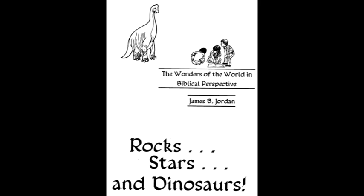Let's begin with the creation of the Sun, Moon, and Stars by looking at Genesis chapter 1, verses 14 to 19. Then God said, 'Let there be lights, or luminaries, in the firmament of the heavens — that is, in the blue sky — to separate the day from the night, and let them be for signs and for appointed times and for days and years, and let them be for lights in the firmament of the heavens to give light on the earth.' And it was established. And God made the two great lights: the greater light to govern the day and the lesser light to govern the night; the stars He made also. And God placed them in the firmament of the heavens to give light on the earth and to govern the day and the night and to separate the light from the darkness. And God saw that it was good. And there was evening and there was morning, a fourth day.